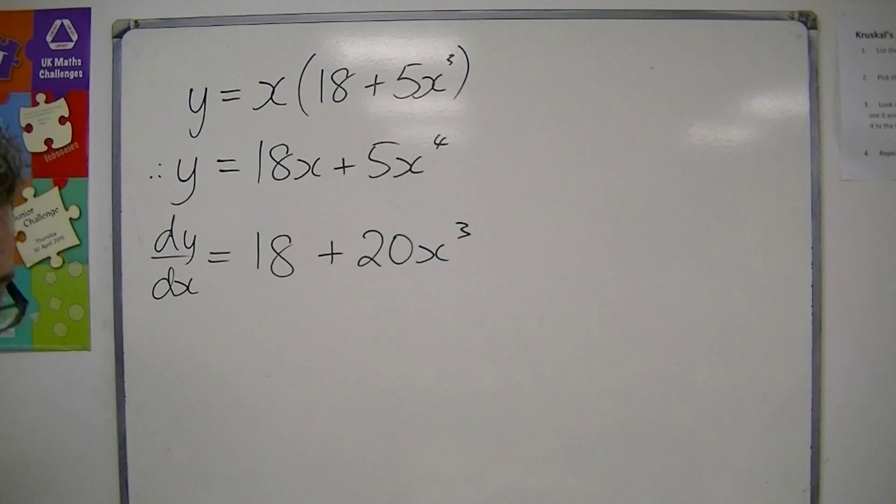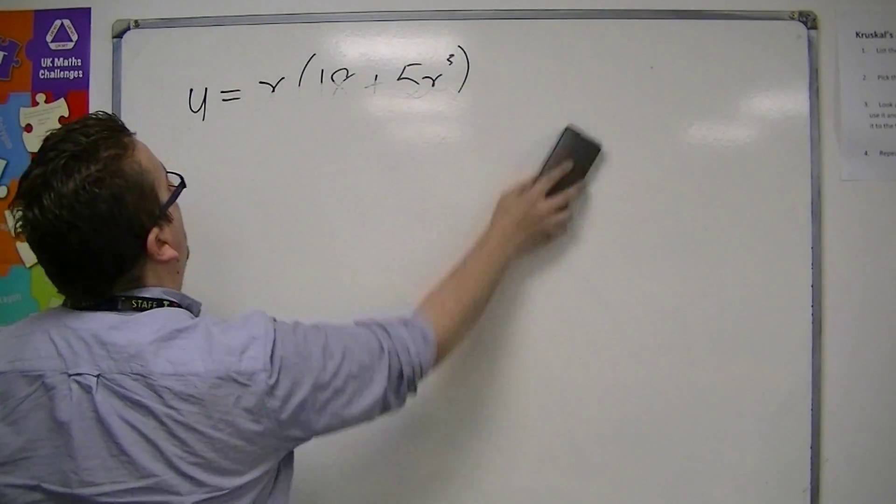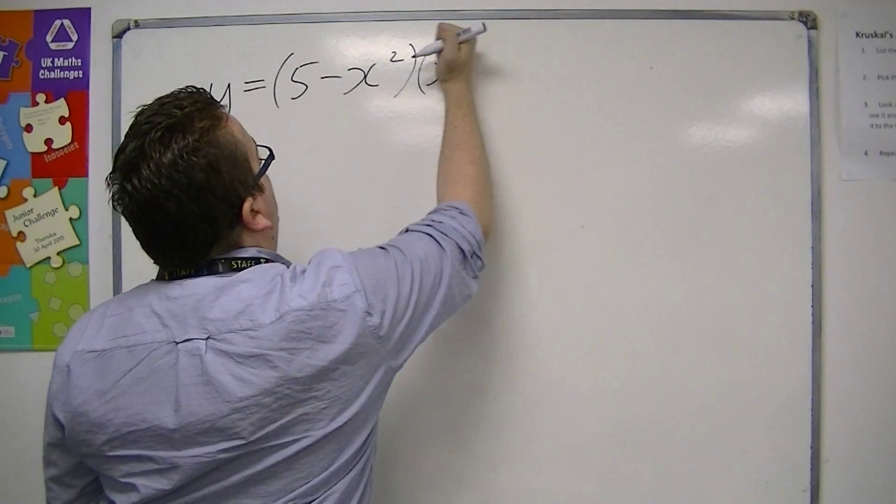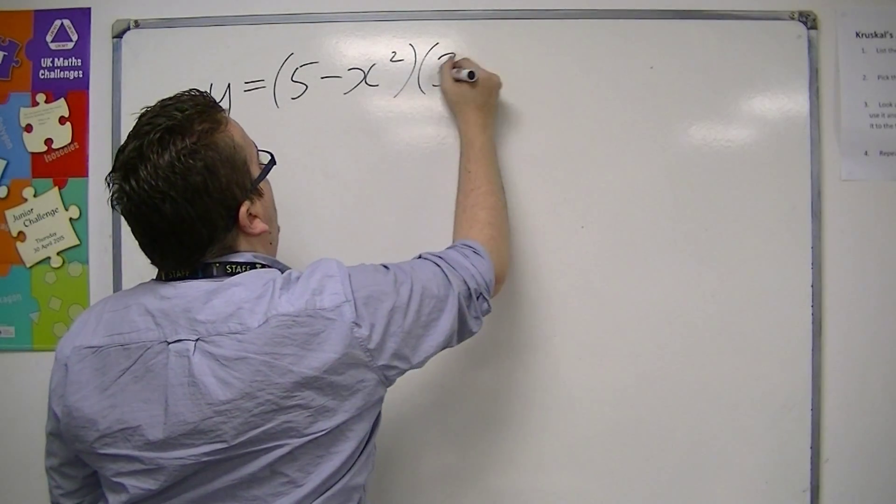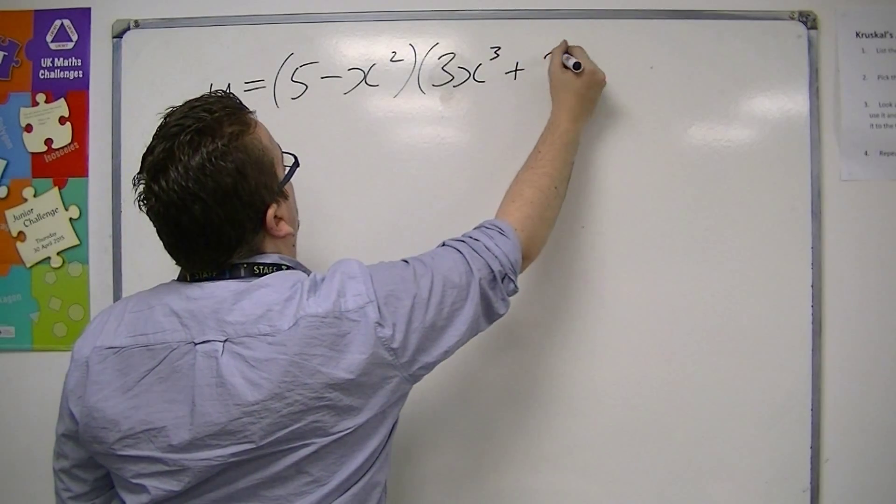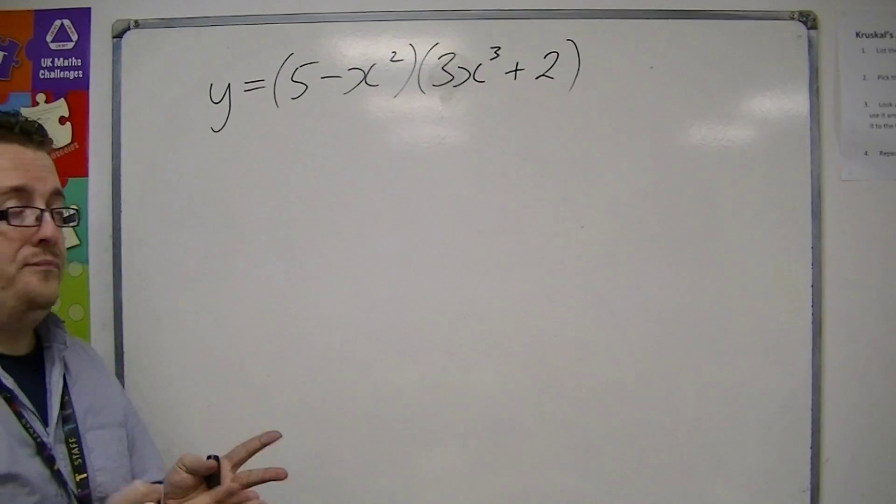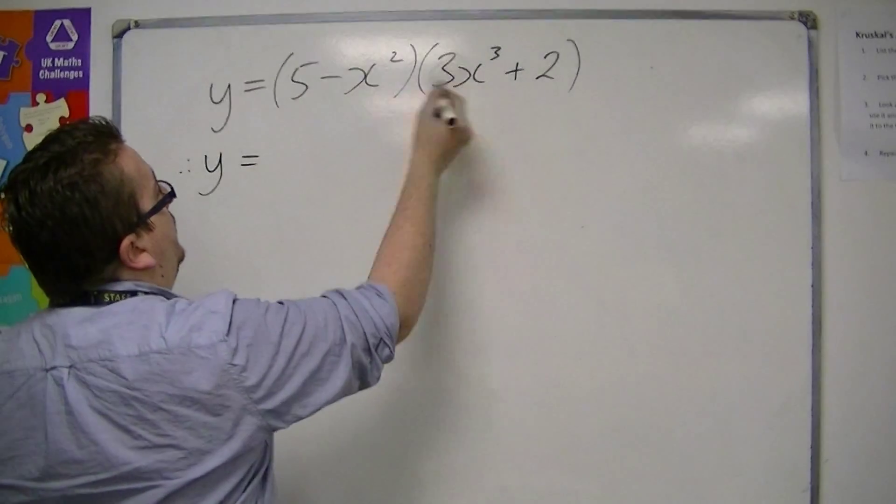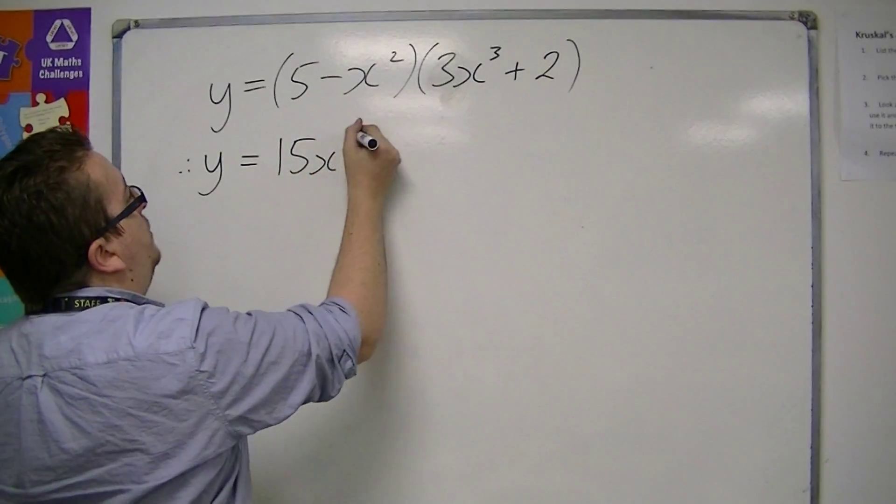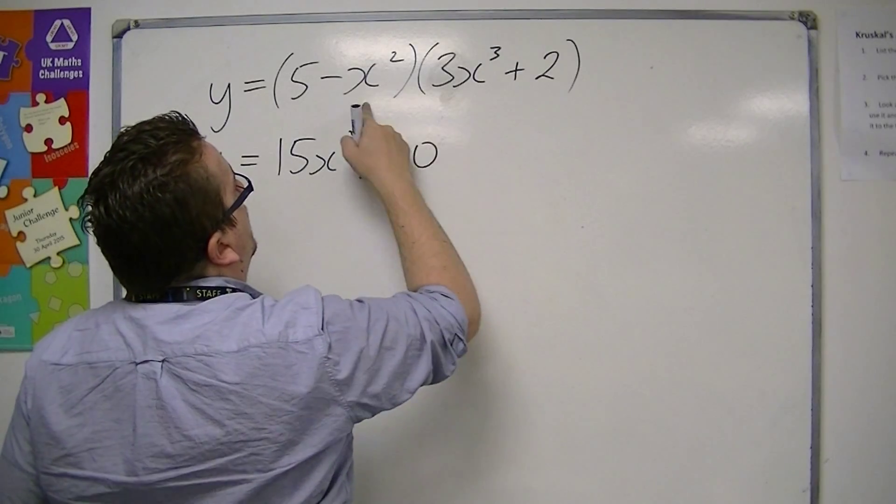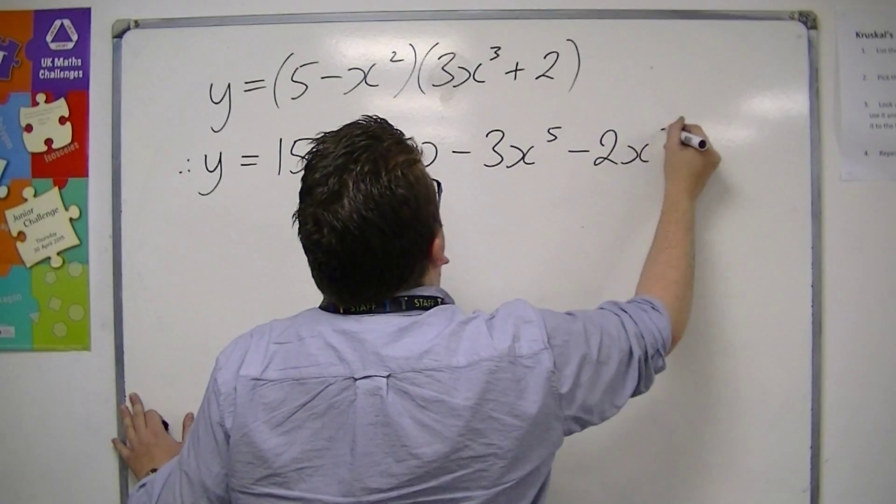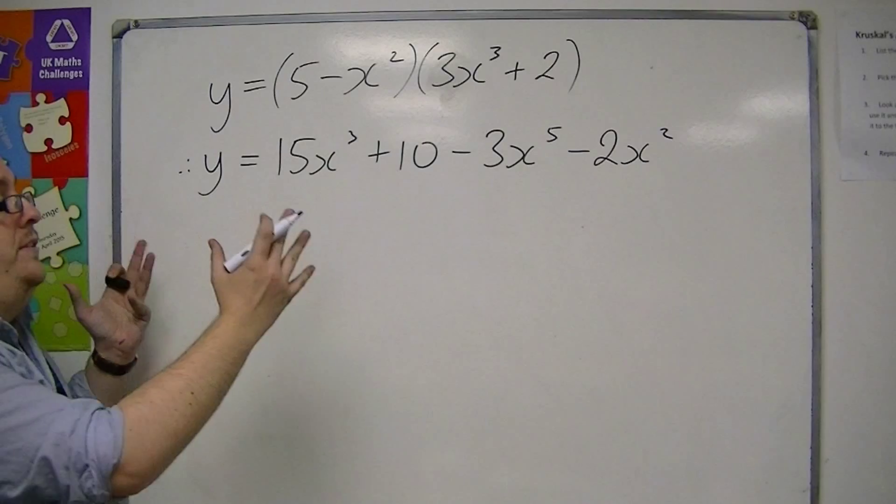Now the same thing applies to when we need to differentiate something like 5 minus x squared times 3x cubed plus 2. So we had something like this. Then, first of all, multiply out the brackets. So we get 15x cubed plus 10 minus 3x to the 5 minus 2x squared.